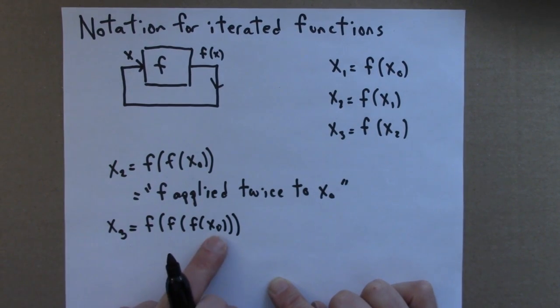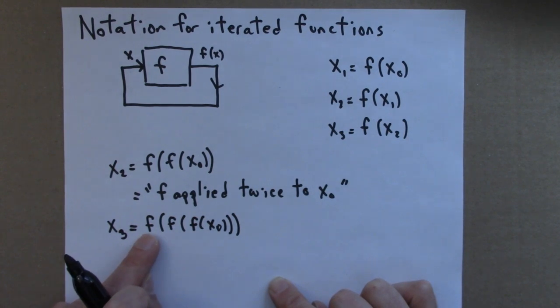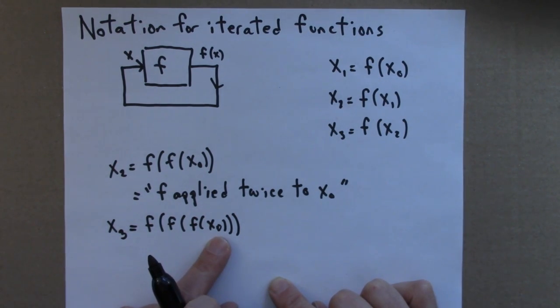So x3 is x0 after f acts on it again and again. So this is x0 to which f has been applied three times.